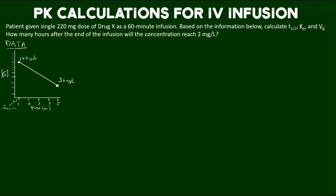Here's the problem. A patient was given a single 220 mg dose of drug X as a 60-minute infusion — so just one dose. Based on the information below, calculate half-life, elimination rate, and volume of distribution.